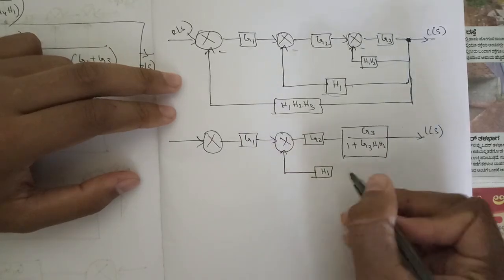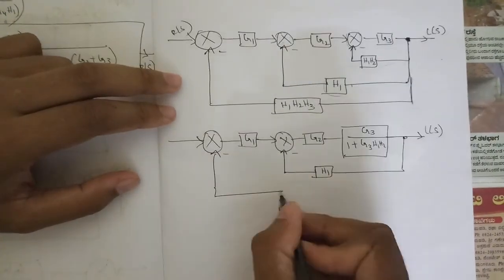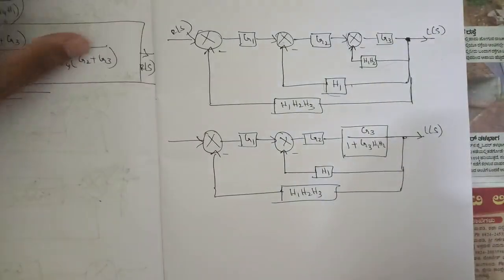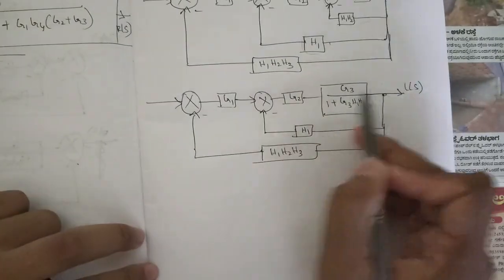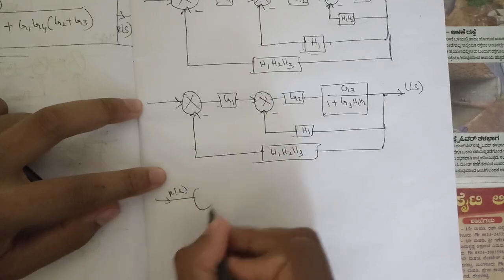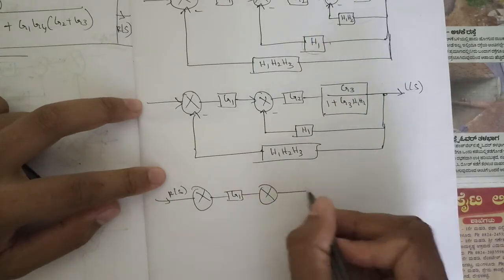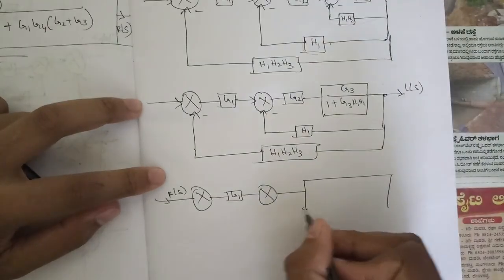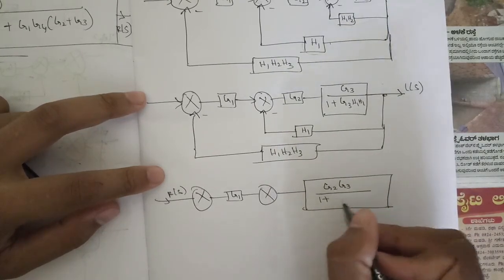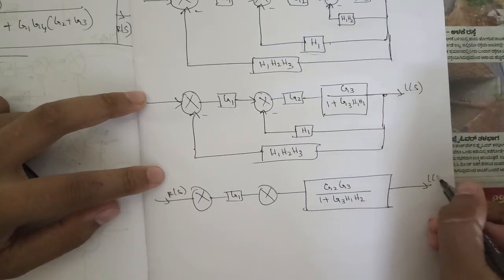This minor loop becomes G3 divided by (1 + G3·h1·h2), giving C(s). Here we have h1, and here we have h1·h2·h3. The next step is that these two are in series — multiply them. Convert it into a single block: multiply them to get G2·G3 divided by (1 + G3·h1·h2), giving C(s).